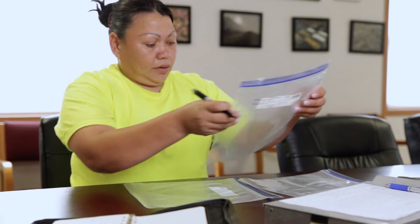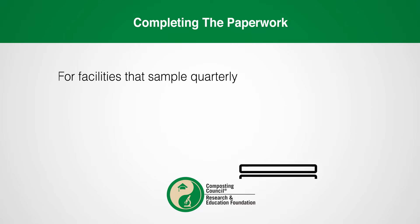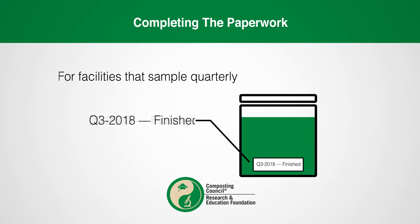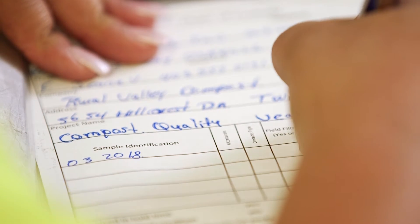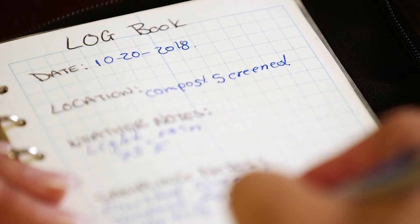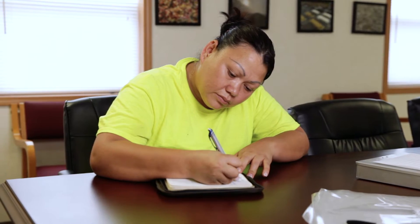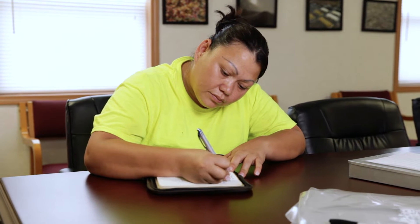The first step in the paperwork is to determine a sample name. Try to keep the name as simple as possible, but include enough information to provide context for others reviewing the analysis — for instance, for facilities that sample quarterly, 'Q3 2018 Finished' would be appropriate. Fill out the chain of custody, label the containers in which the sample will be shipped, and fill out your logbook with the date, location of sampling, weather conditions, and any other notes relevant to the quality of the compost.